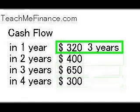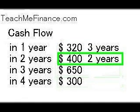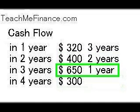The second payment — the one you get two years from today — is for $400, and that $400 is going to have the opportunity to earn interest for two years, compounded monthly. Three years from today, you're going to get $650, and that $650 is going to have the opportunity to earn interest, again compounded monthly, for one year.